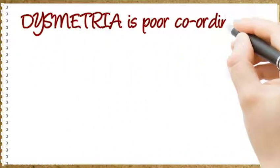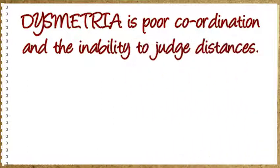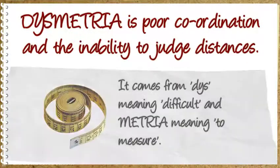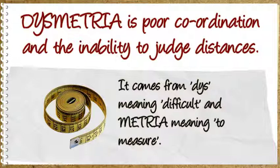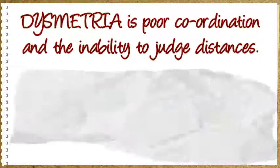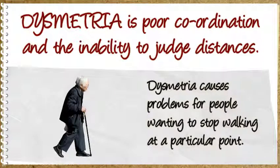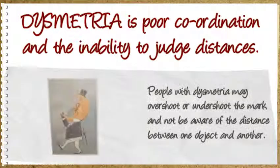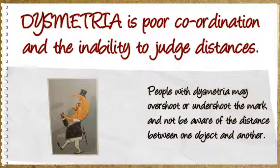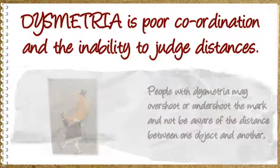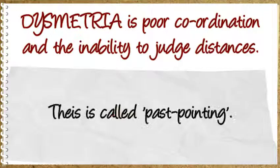Dysmetria is poor coordination and the inability to judge distances. It comes from dys meaning difficult and metria meaning to measure. Dysmetria causes problems for people wanting to stop walking at a particular point. People with dysmetria may overshoot or undershoot the mark and not be aware of the distance between one object and another. This is called past pointing.